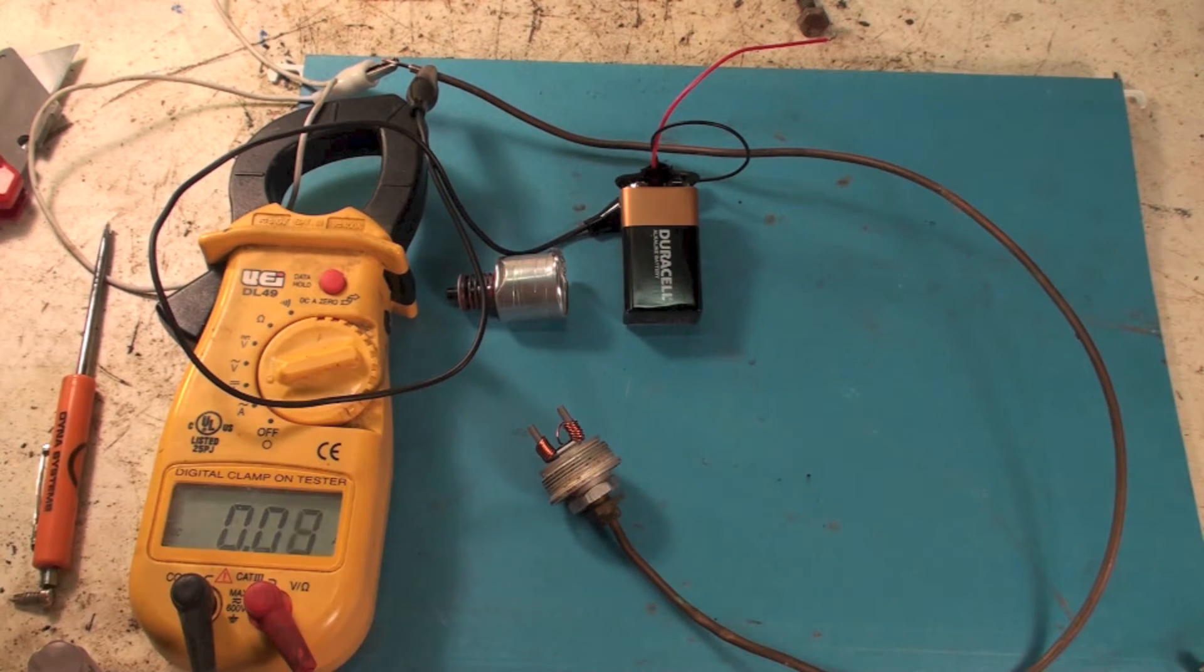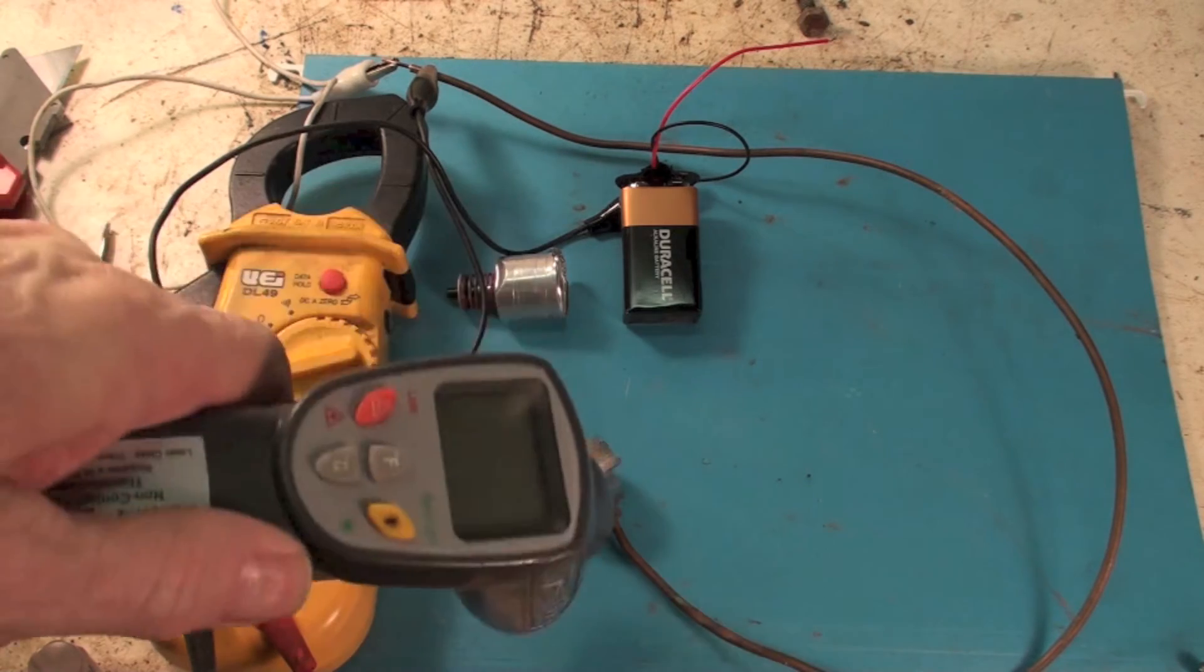It's a nine volt battery. I'm gonna go ahead and hook it up. You can see from the meter, this is a DC ammeter, and we'll see if there's any damage to this.